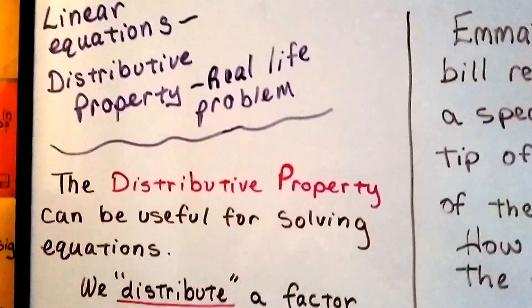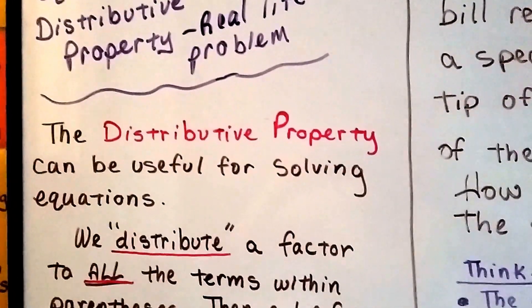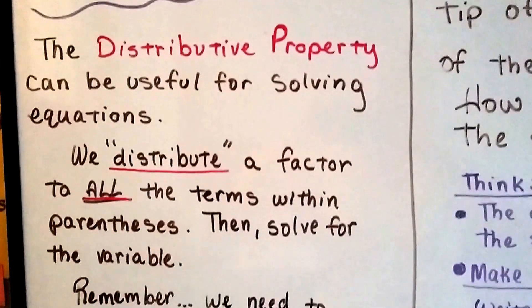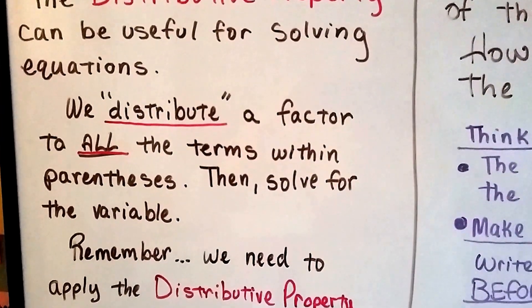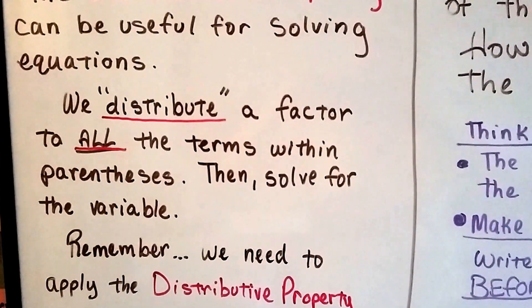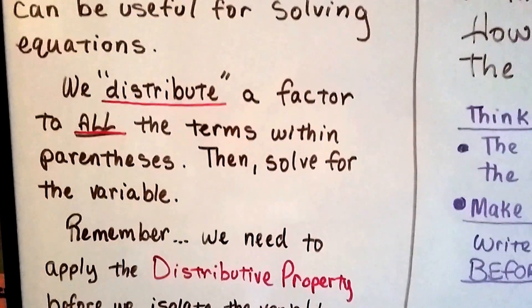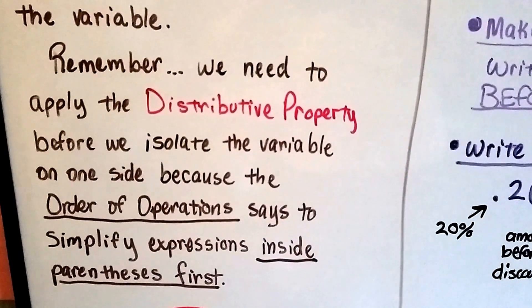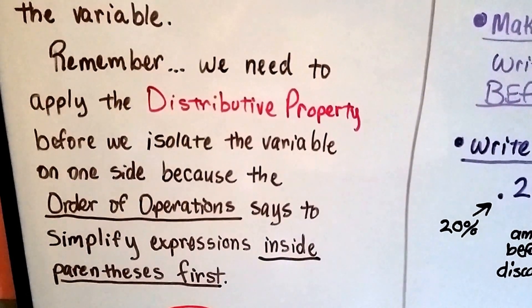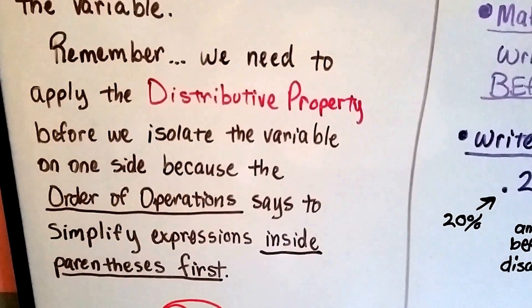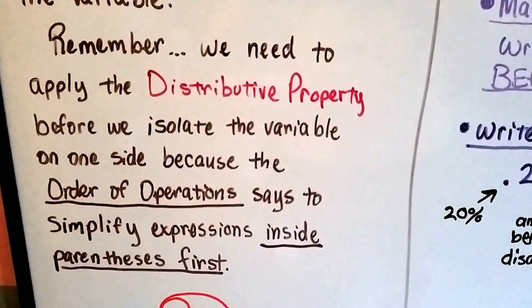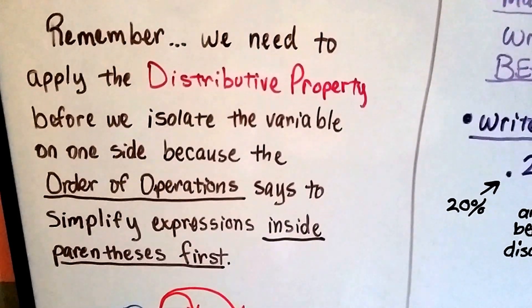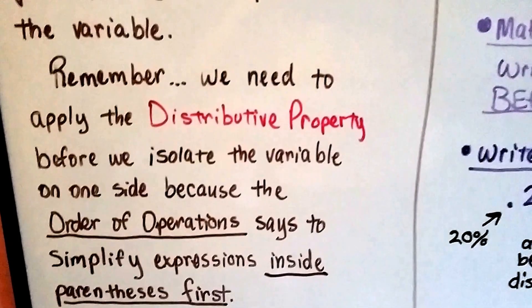As we said in the previous video, the distributive property can be useful for solving equations. We distribute a factor to all the terms within parentheses, then solve for the variable. Remember, we need to apply the distributive property before we isolate the variable to solve it, before we isolate that variable on one side because the order of operations says to simplify expressions inside the parentheses first.